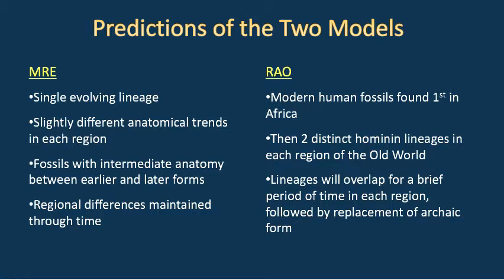MRE predicts a single evolving lineage with slightly different anatomical trends in each region, and some regional differences maintained through time. We would also expect to see fossils with intermediate anatomy in all parts of the world. With recent African origins, we would expect to find modern human fossils first in Africa, and then two distinct lineages in each region — some members of Homo erectus, and then eventually Homo sapiens moving in and replacing those older populations.